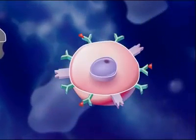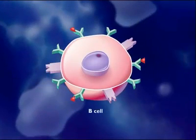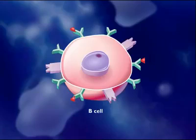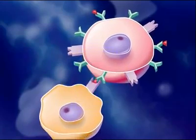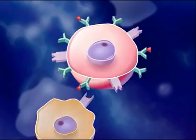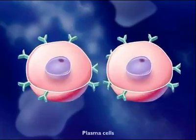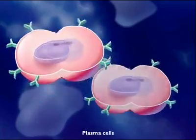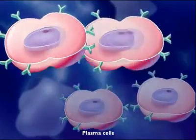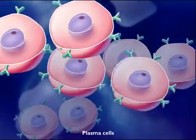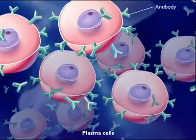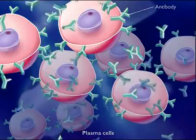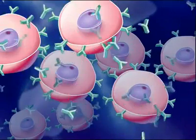B-cells also come in millions of different types, each able to recognize a particular antigen. When B-cells become activated by T-helper cells, they differentiate into plasma cells. These plasma cells become antibody-producing factories, flooding the bloodstream with antibodies that can bind to the antigen involved in this infection.